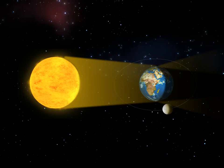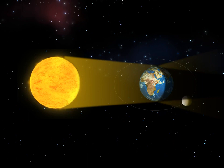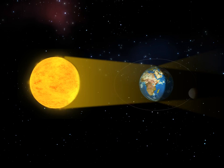You might have wondered why we do not see the eclipse of the moon on every full moon day. From the animation, it is clear that the moon, the earth, and the sun do not come in the same line on every full moon day, and hence lunar eclipse does not occur every day. The lunar eclipse lasts only for a short duration.